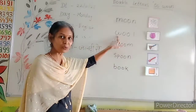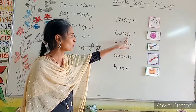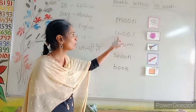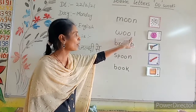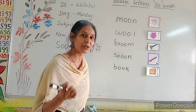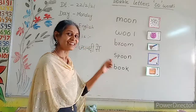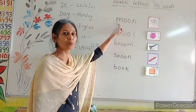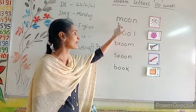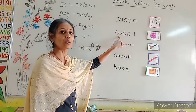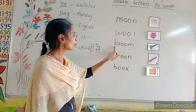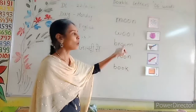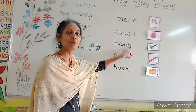Then next — W-O-O-L. Wool. W-O-O-L. Wool. Now your turn — bolo ye. Dekho, wohi sound aata hai na? Dekho humne moon bola toh oo ka sound aata hai. Then wool. Then broom — B-R-O-O-M. Broom. Okay.